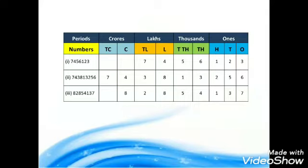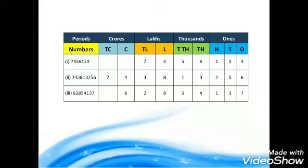In the Indian number system, counting from the right-hand side towards the left-hand side, we have the ones period, thousands period, lakhs period, and crores period. The ones period covers the first three digits: ones, tens, and hundreds. In the thousands period, the next two digits are thousands and ten thousands. In the lakhs period, the next two digits are lakhs and ten lakhs. In the crores period, the next two digits are crores and ten crores.